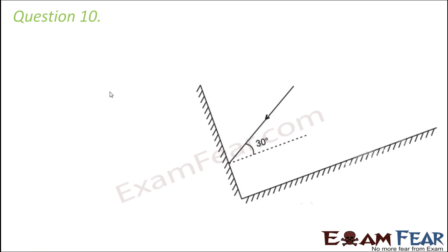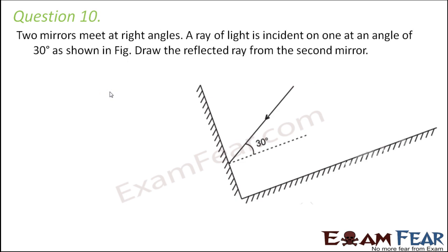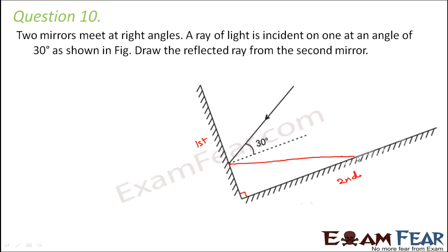Question number 10: two mirrors meet at right angles. As you can see in this picture, this is the first mirror and this is the second mirror — they meet at right angles to each other. A ray of light is incident on one at an angle of 30 degrees. This is the incident ray at 30 degrees. The angle of reflection from the first mirror will also be 30 degrees, so we draw the reflected ray at 30 degrees.